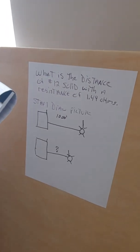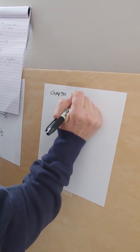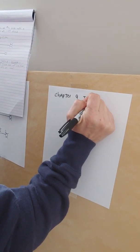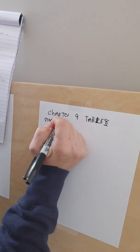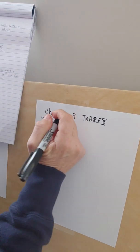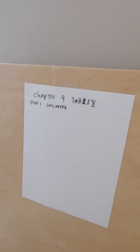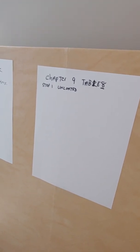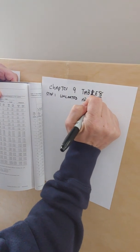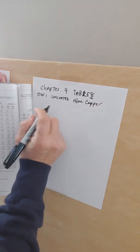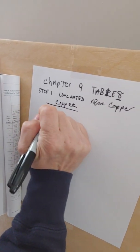We're going to go to Chapter 9 Table 8, and step one, you're going to look at the uncoated. Above uncoated is copper, so if you look you'll see the word copper, then underneath that you got uncoated.